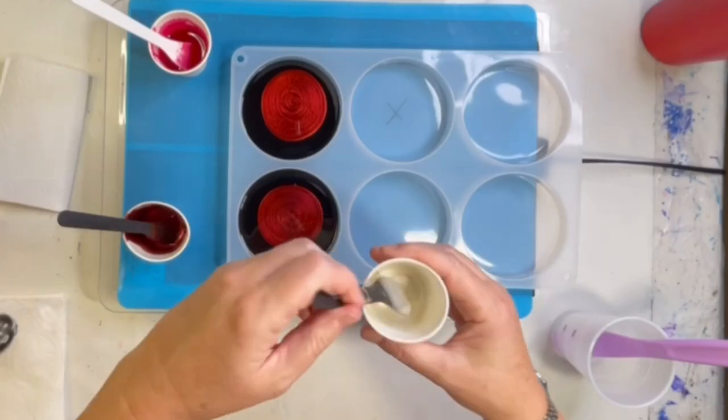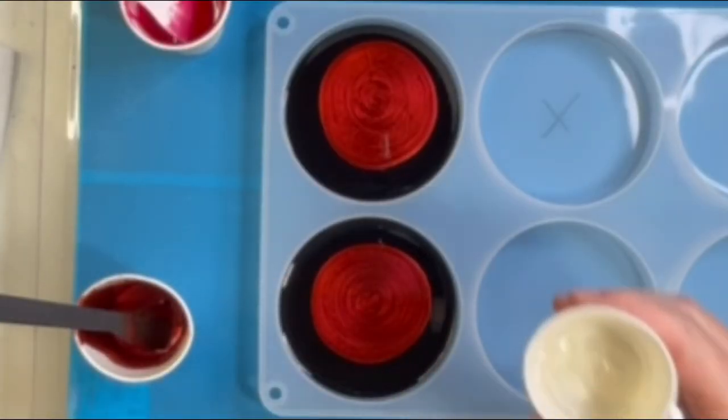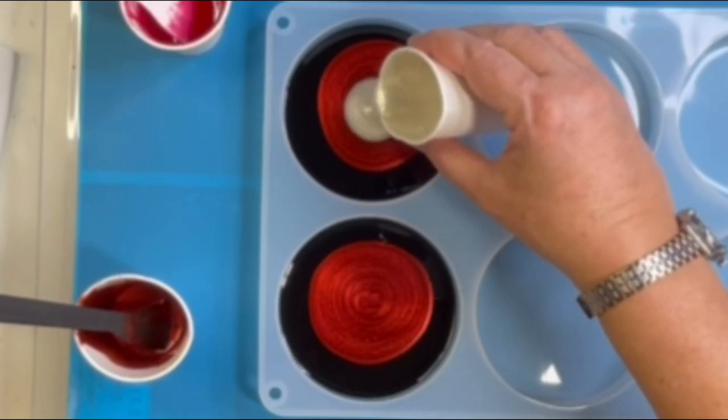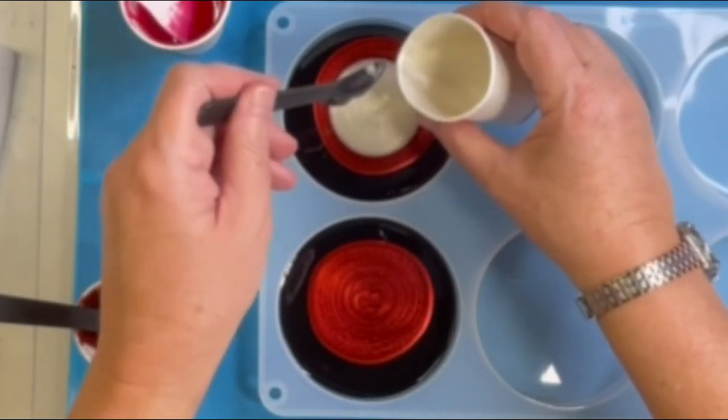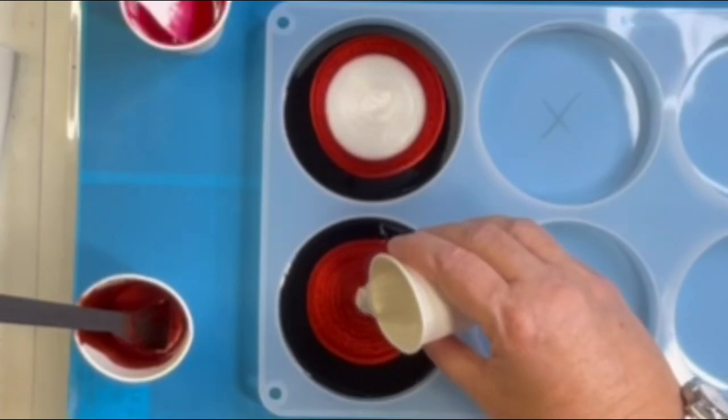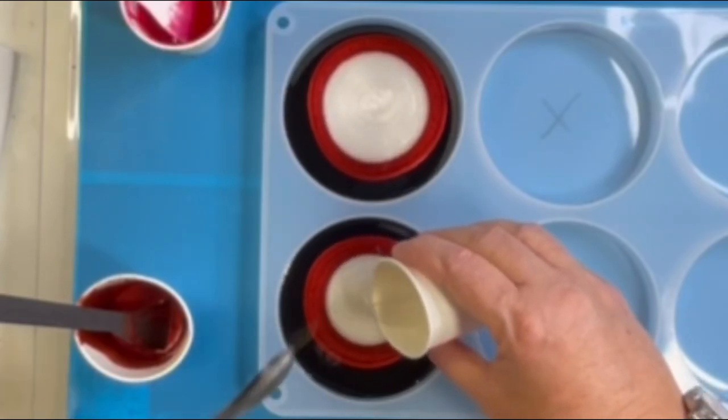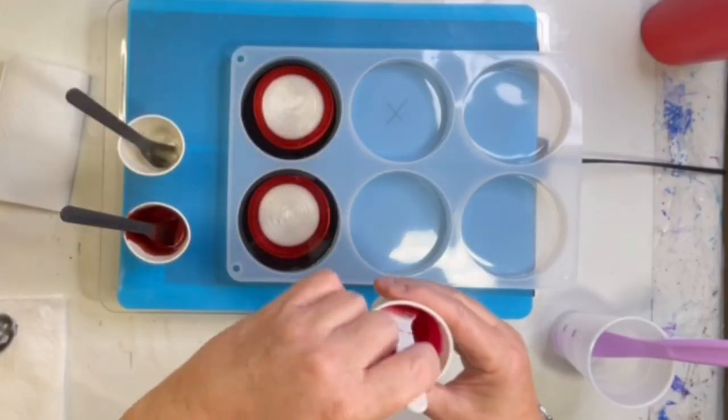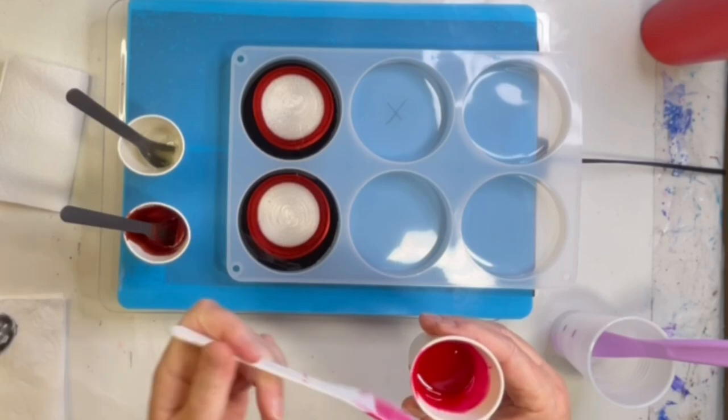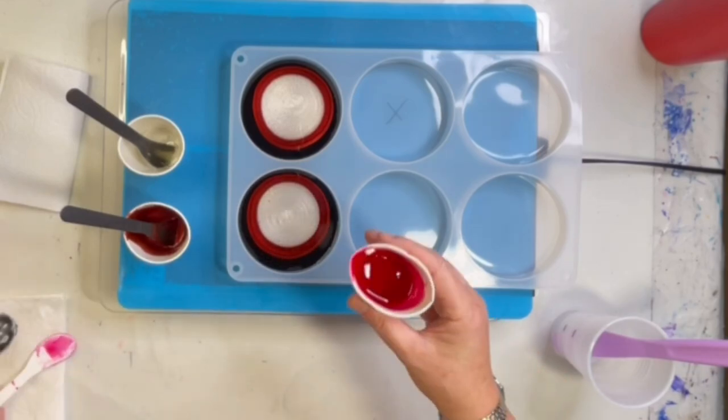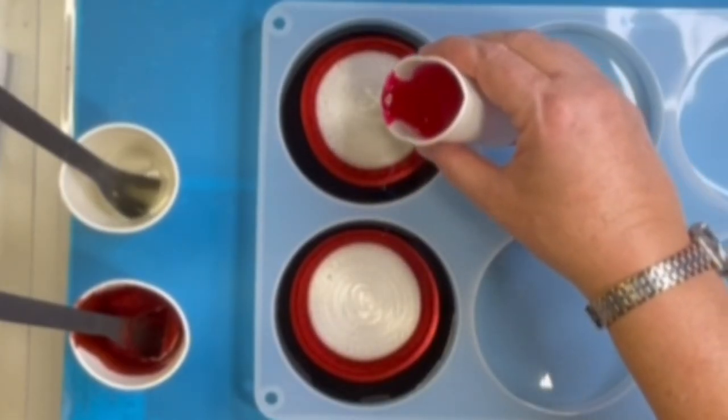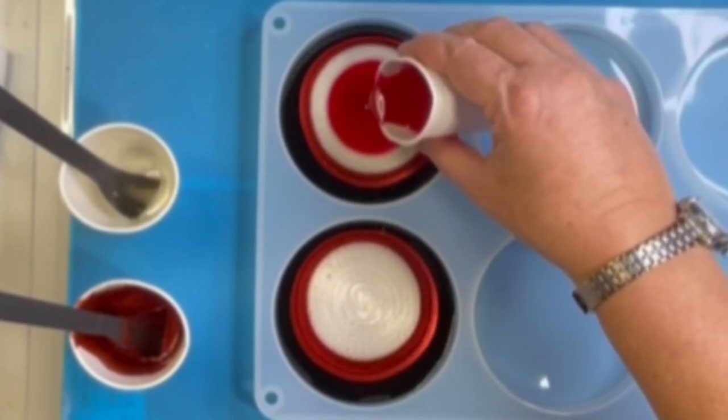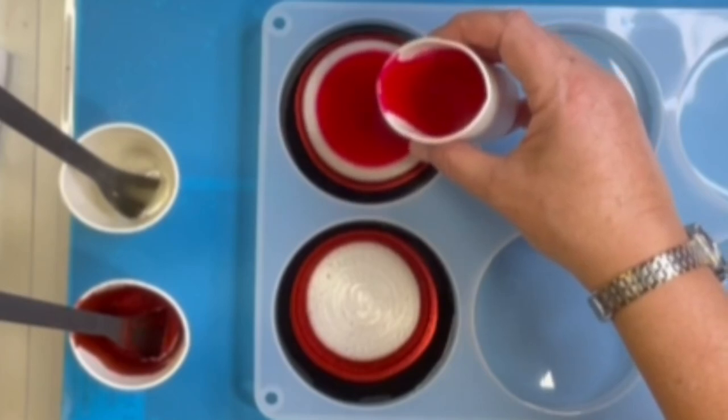And then we do the white. Again, a quarter and a quarter. I'm just eyeballing it. And then the red. This one I just need to divide it in half.